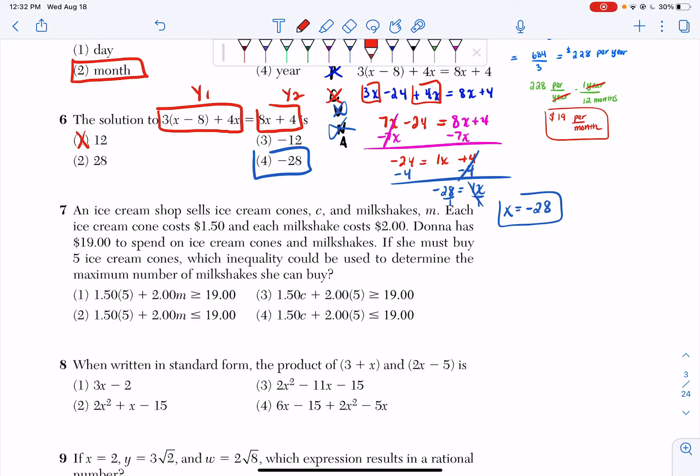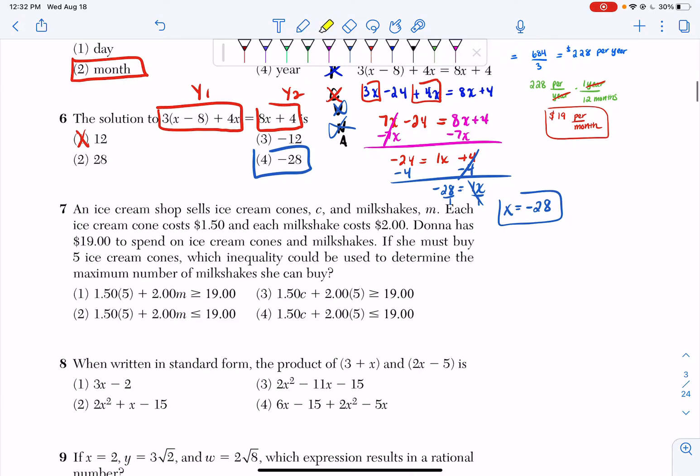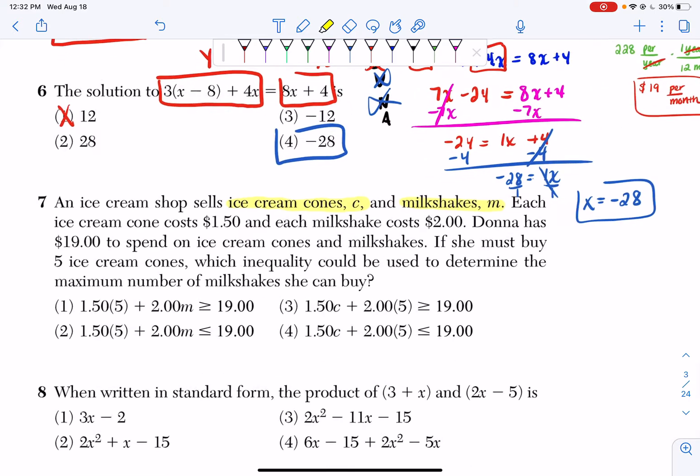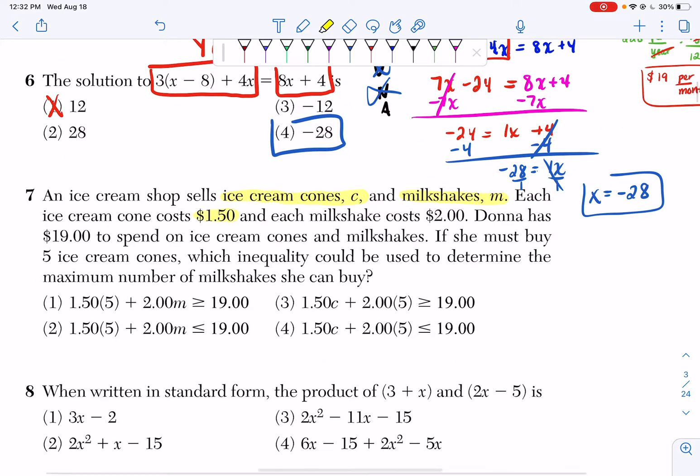Okay, question number seven for June 2021. An ice cream shop sells ice cream cones C and milkshakes M. Each ice cream cone costs $1.50. Each milkshake costs $2.